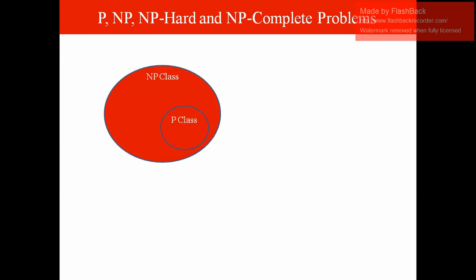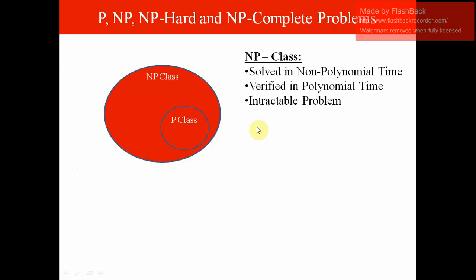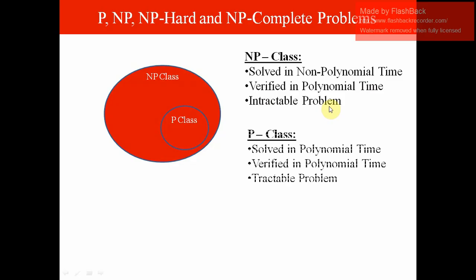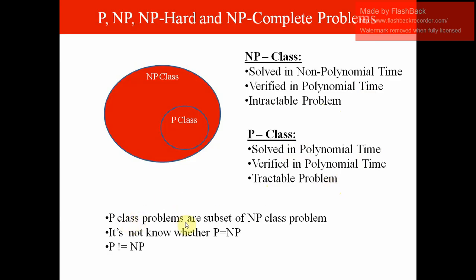To summarize: NP class problems are solved in non-polynomial or exponential time — high time complexity — but verified in polynomial time with very low verification complexity. They are also called intractable problems. P class problems are solved and verified in polynomial time, with low running time and verification time — they are tractable problems. P class problems are a subset of NP class problems, and it is not yet known whether P equals NP. Research on this is still ongoing.